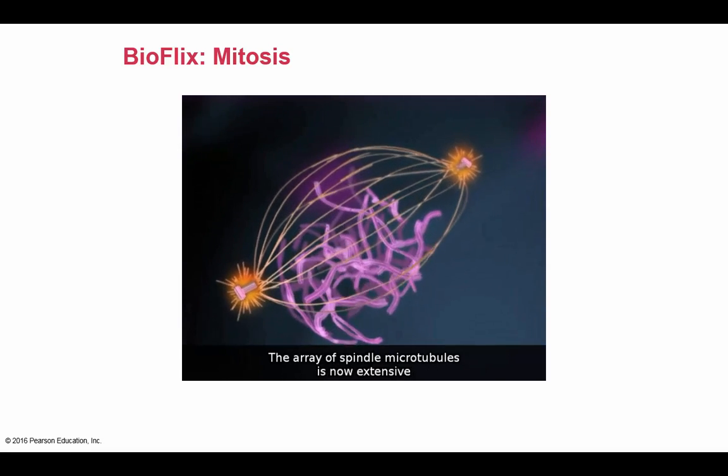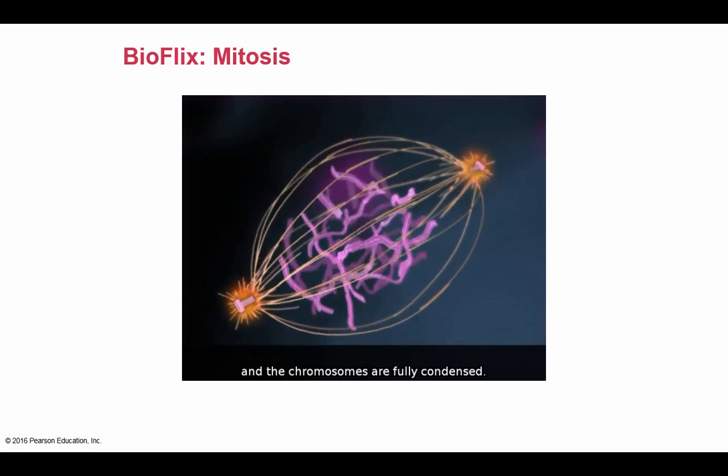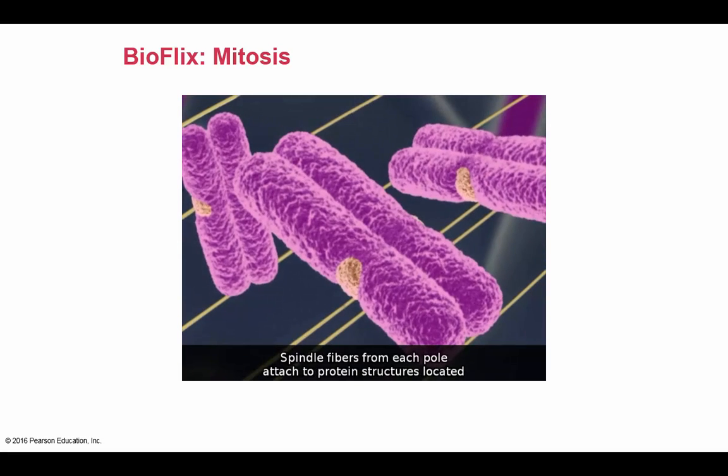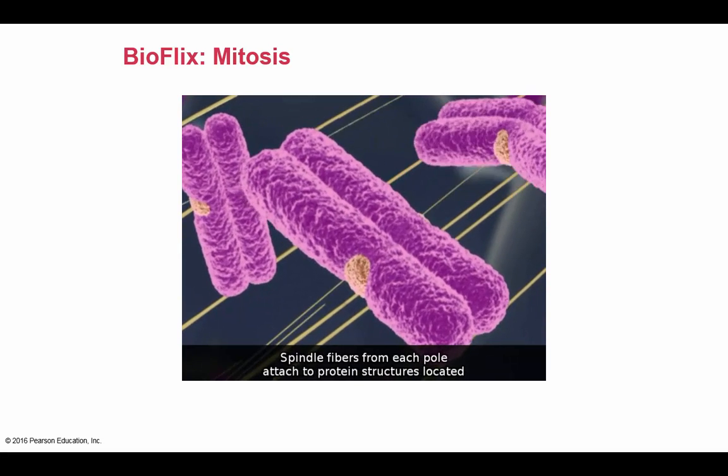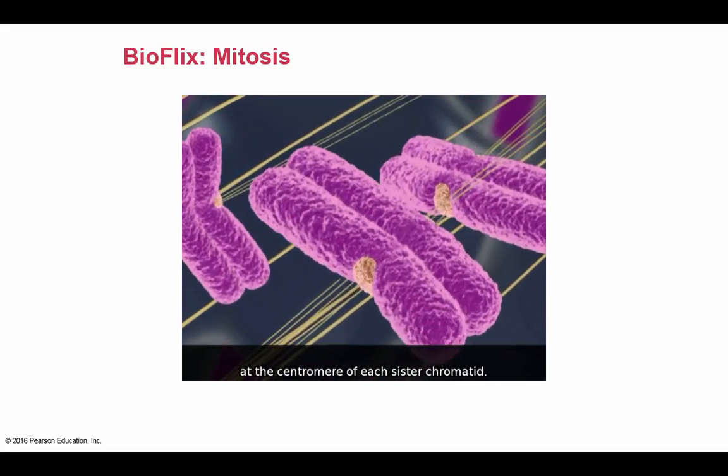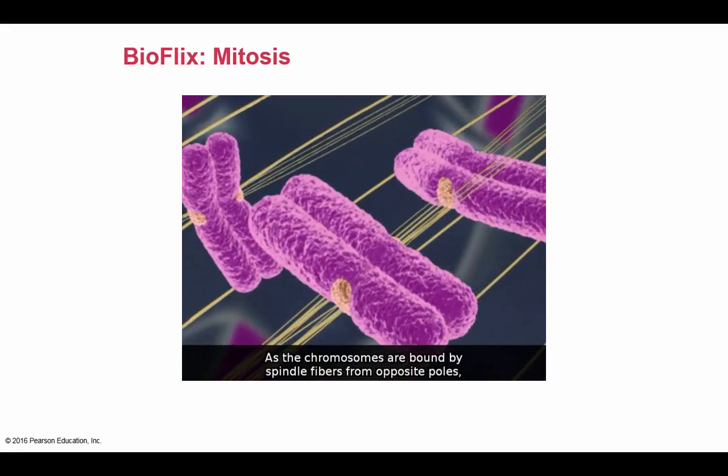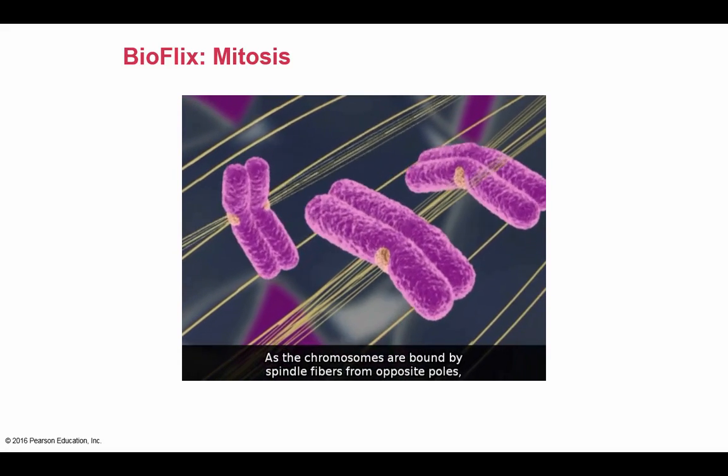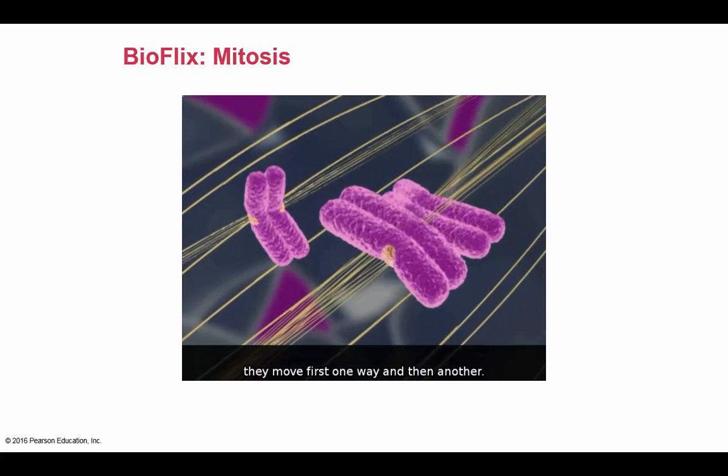The array of spindle microtubules is now extensive, and the chromosomes are fully condensed. Spindle fibers from each pole attach to protein structures located at the centromere of each sister chromatid. As the chromosomes are bound by spindle fibers from opposite poles, they move first one way and then another.